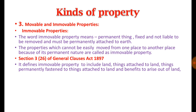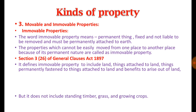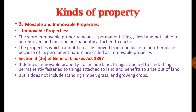Benefits arising out of the land — such as the right of way, right to take water from canals or rivers, fishery rights, etc. — are all included in the concept of immovable property. However, this definition specifically excludes standing timbers, grass, and growing crops, because such crops and timbers are grown with the intention to cut down and use for different purposes like constructing buildings, or grass cut for cattle.